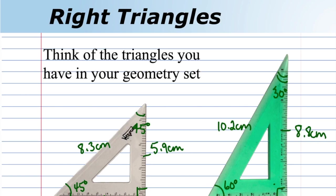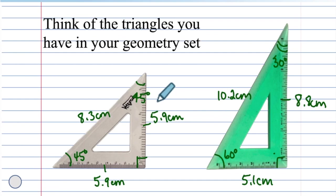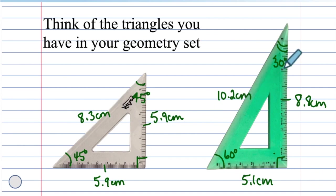We spent some time measuring the angles and the sides of two triangles often found in geometry sets. We found that we have a 45-45-90 degree triangle and a 30-60-90 degree triangle. The triangles ended up having different side lengths depending on how large or small the triangles were.